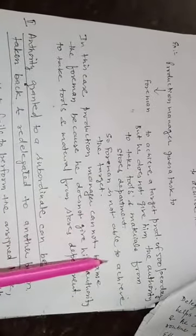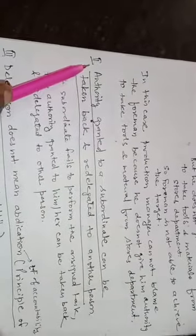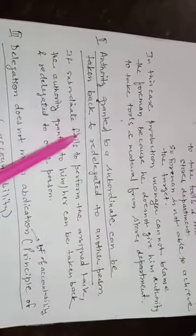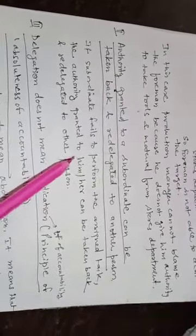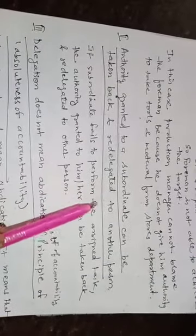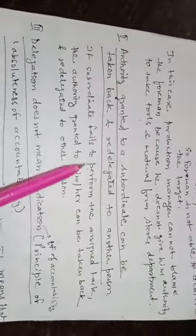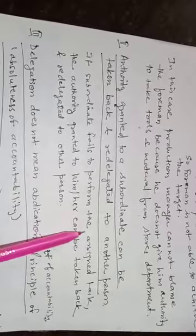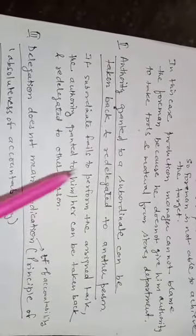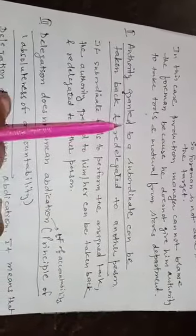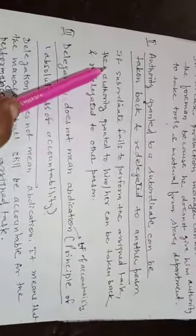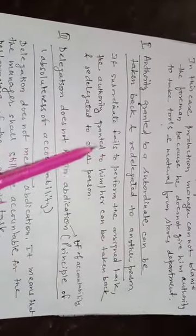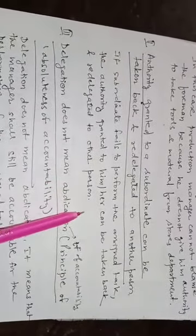The second principle is: authority granted to a subordinate can be taken back and re-delegated to another person. For example, a teacher made you class monitor and asked you to collect and submit notebooks daily. If you didn't do the work properly, the teacher can remove you and make another student monitor. So if a subordinate fails to perform the assigned task, the authority granted can be taken back or re-delegated to another person.